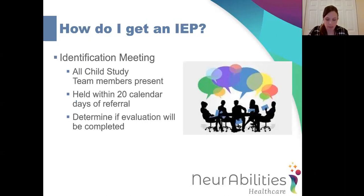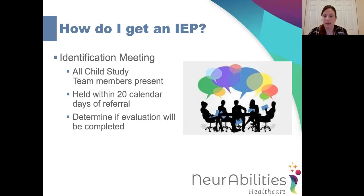At the identification meeting, which must be held within 20 calendar days of the date of your letter, you'll attend and be able to share information about your child's strengths and weaknesses, any relevant medical diagnoses, and any concerns regarding their performance in school. The team will listen to all the information and then make a determination on whether an evaluation will be completed. If a child is coming in with a diagnosis and previous services, an evaluation will typically be completed. There are times where other interventions may need to be put in place first, but typically if a child is already receiving services, they will conduct an evaluation.